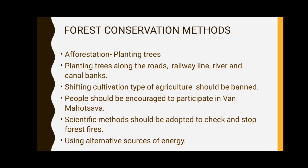Shifting cultivation type of agriculture should be banned. Shifting cultivation is a major source of forest depletion and it is also increasing soil erosion, so we should ban this type of cultivation method as it is a very primitive method. Next, people should be encouraged to participate in programs like Van Mahotsav — public awareness programs where people are appealed to do more and more afforestation and plant more trees. Through social awareness, society will be aware and forest conservation will happen effectively.